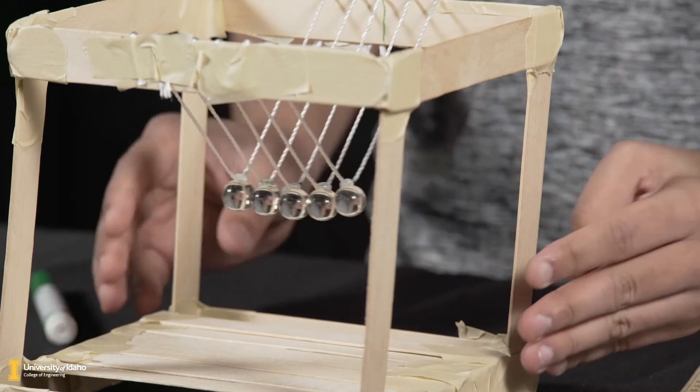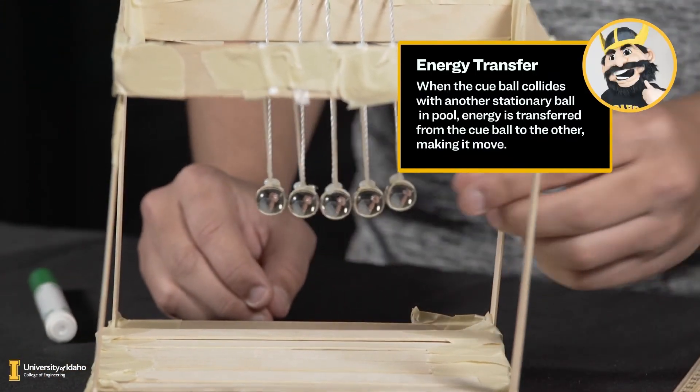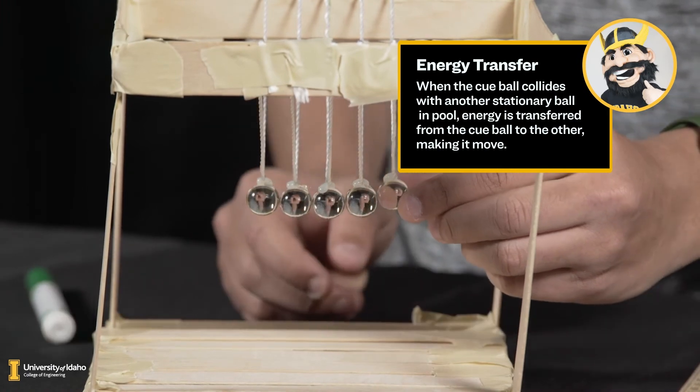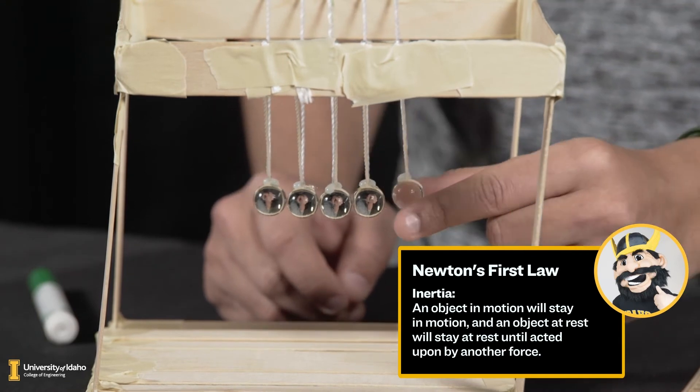And with that, your Newton's Cradle is complete. When you move a marble on one side, when the marble hits the other, it slows down because of friction and gravity. These outside forces are changing its motion, according to Newton's First Law.